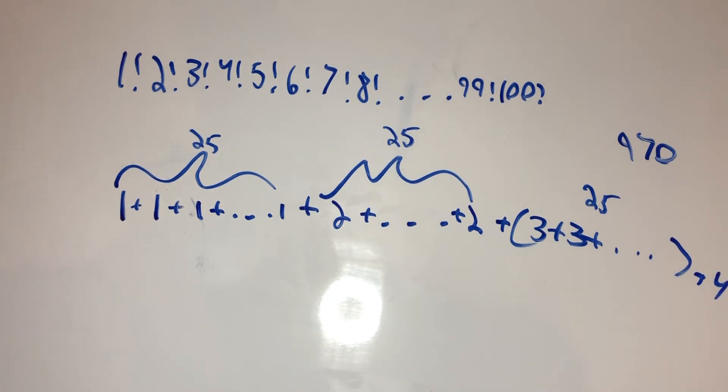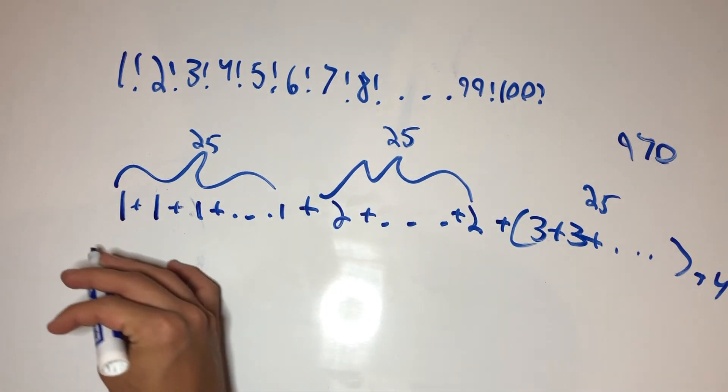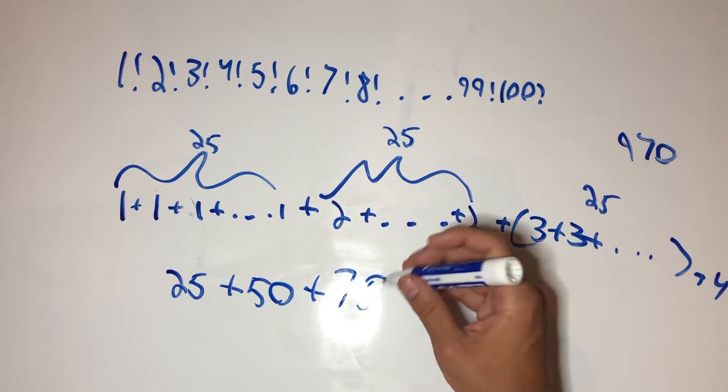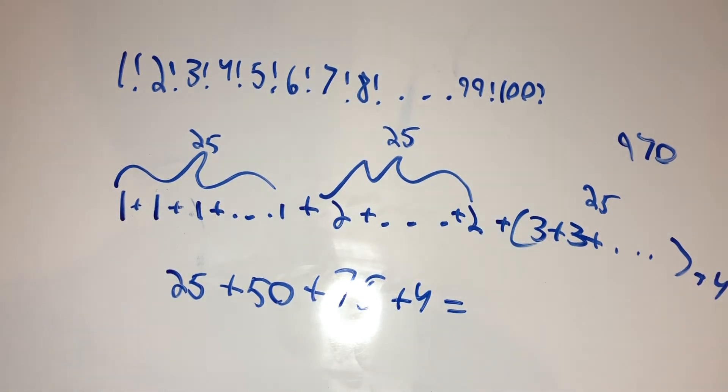Now, let's just add this up. So, we have 25 here, 50 here, 75 here. Now, this is plus 4. So, this is equal to 154. Okay. So, 970. We had 154 plus 970.